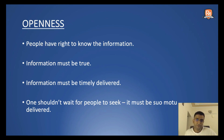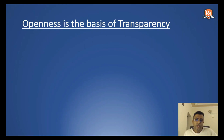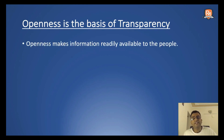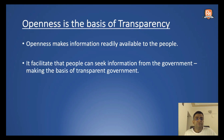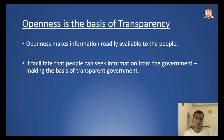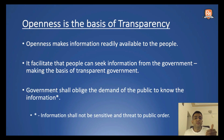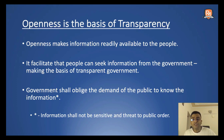Openness gives rise to a foundational value known as transparency. Transparency emerges from the principle of openness. Openness makes information readily available to the people. It facilitates that people can seek information from the government, and this becomes the hallmark of a transparent government. If people think they should have access to information and seek it from the government, a transparent government will be obliged to respond to this demand. The government shall oblige the public's demand to know the information, as long as it is not sensitive information or a threat to public order.